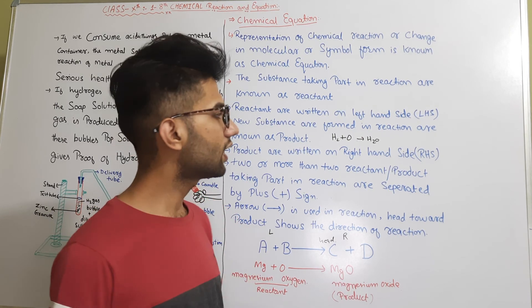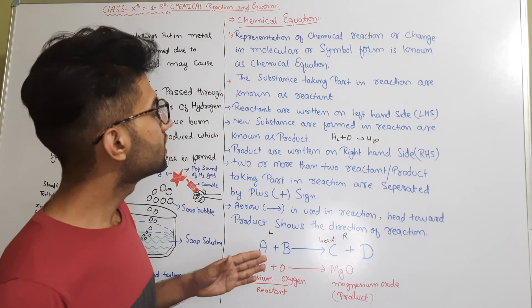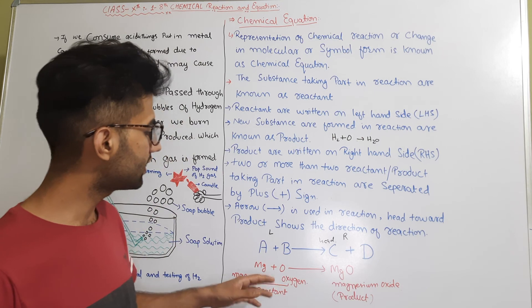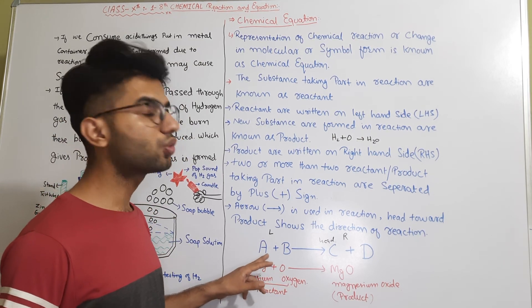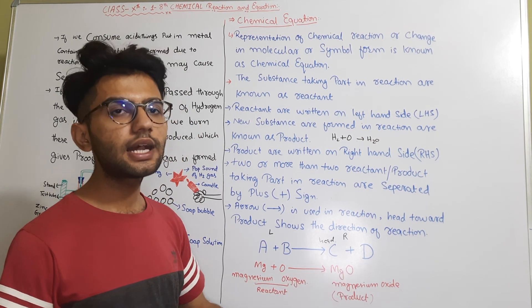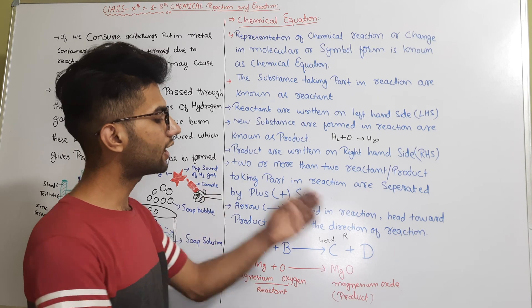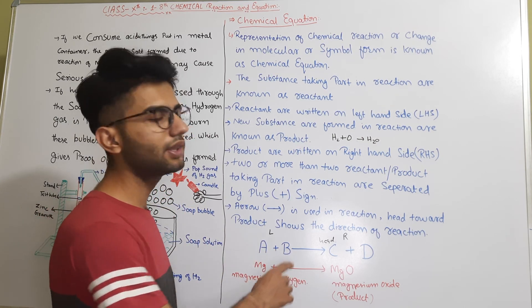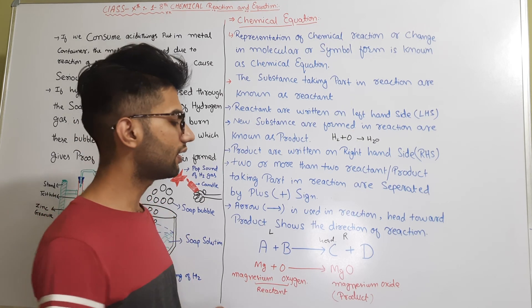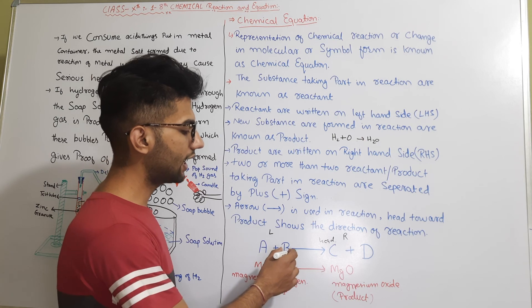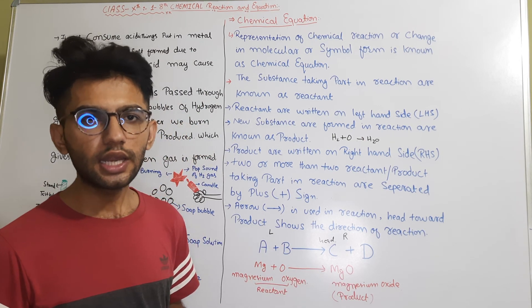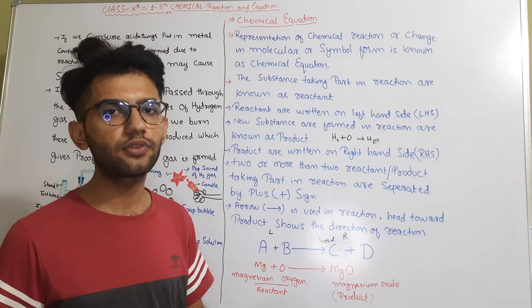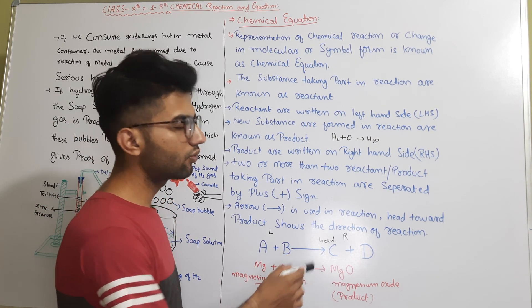There are some rules for writing chemical equations. Substances taking part in a reaction — those responsible for starting the reaction — are known as reactants. Substances formed due to the reactivity of reactants are known as products. Reactants are written on the left-hand side and products on the right-hand side. If there are two or more reactants or products, we use a plus sign between them. An arrow starts from the reactants and points toward the products.